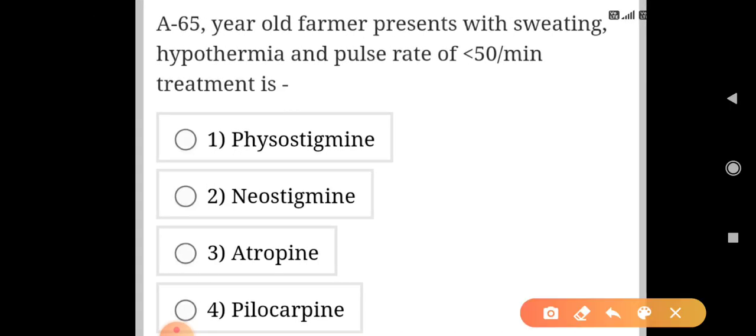A 65-year-old farmer presents with sweating, hypothermia, and pulse rate less than 50 beats per minute. Treatment is by atropine. This is bradycardia and we treat bradycardia with atropine.